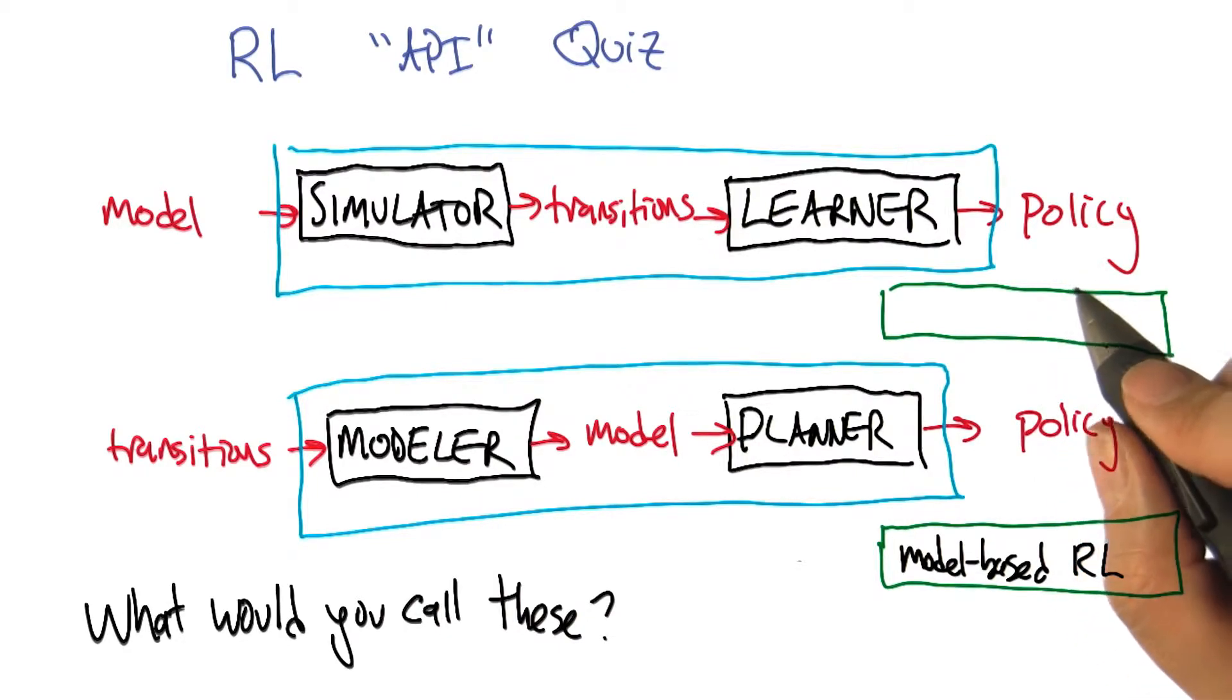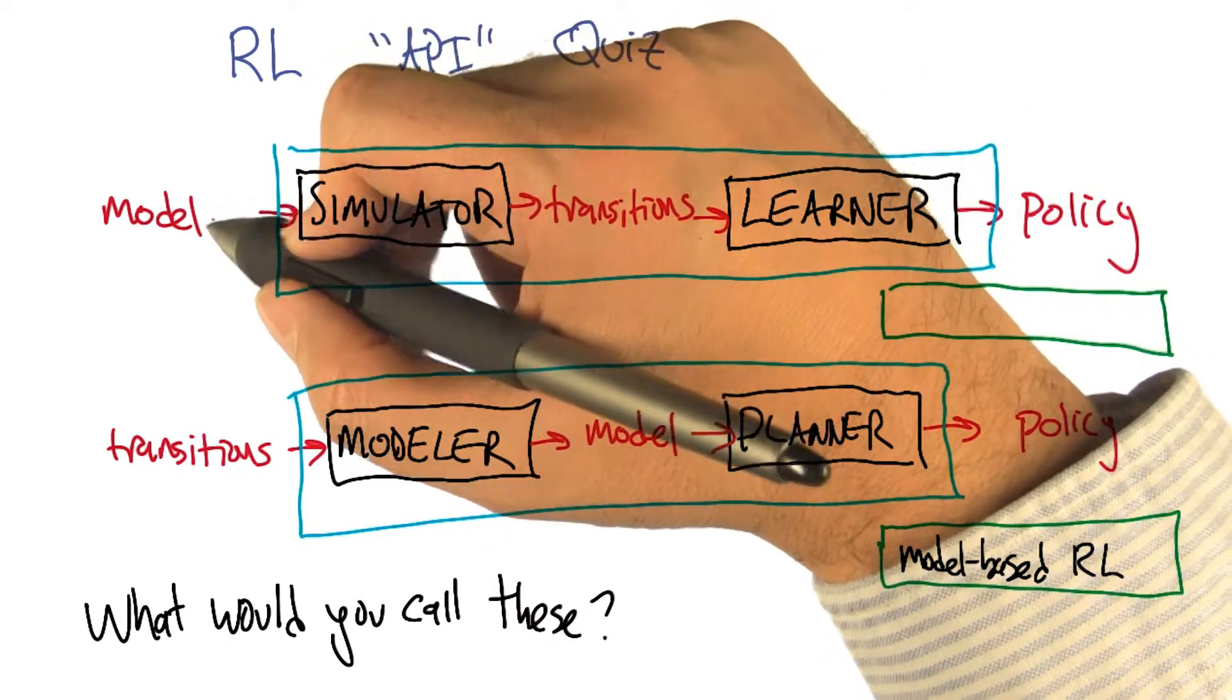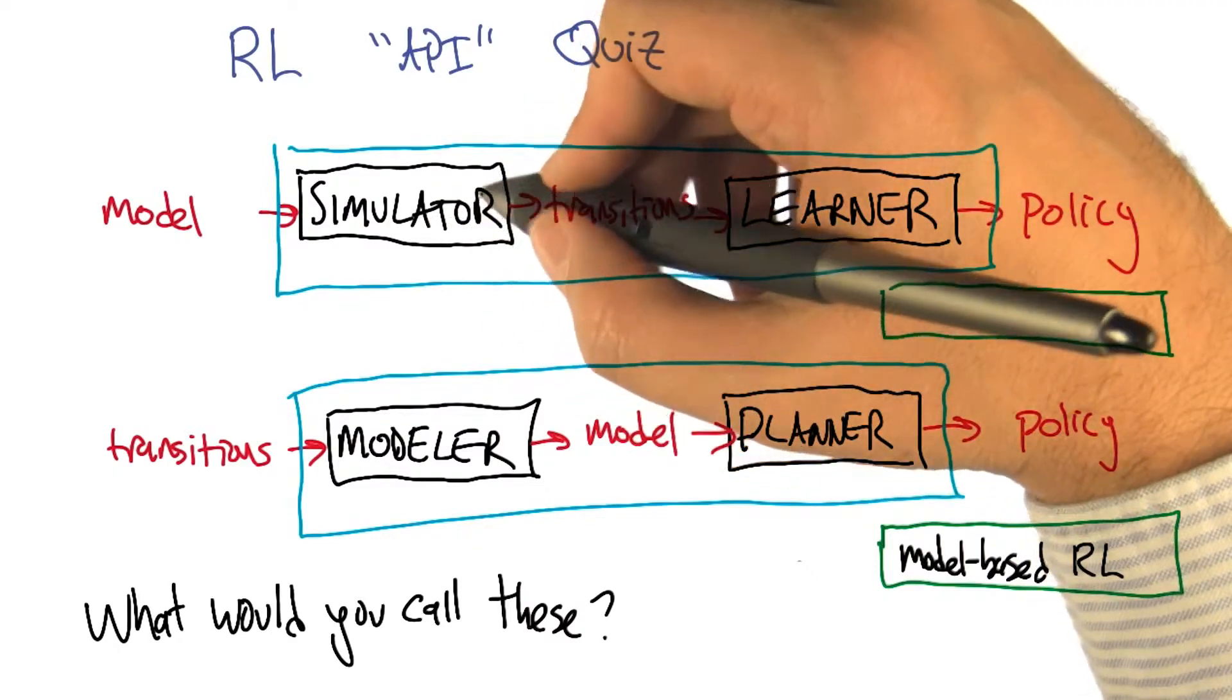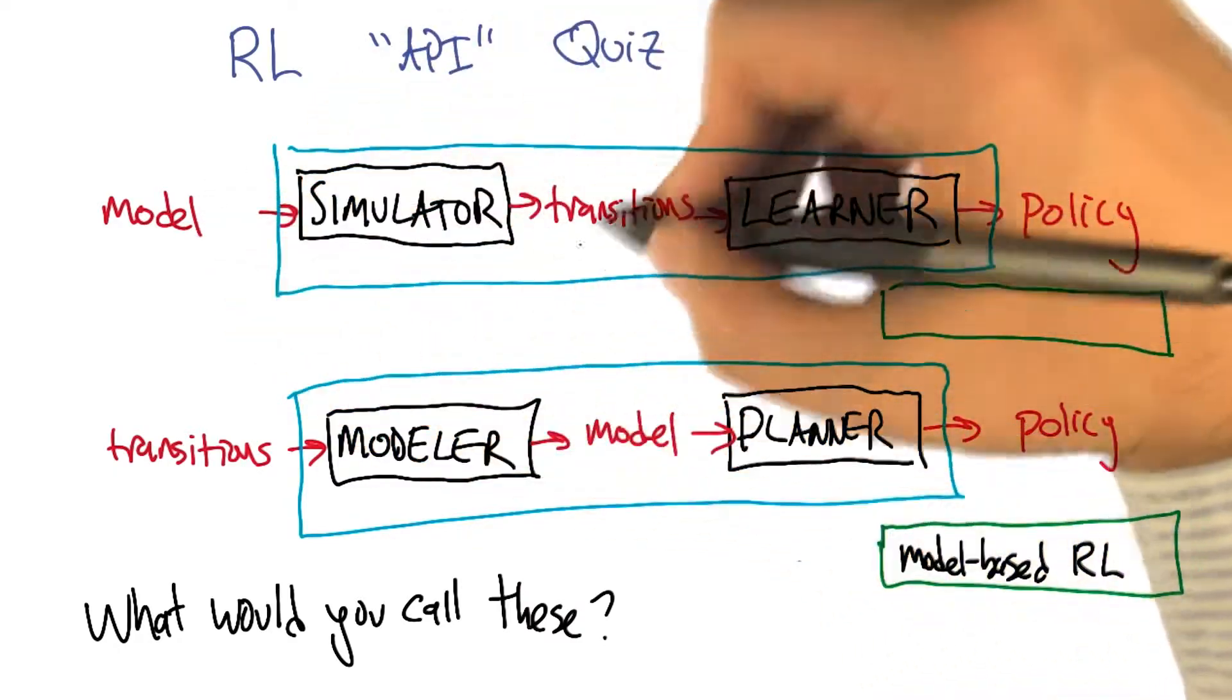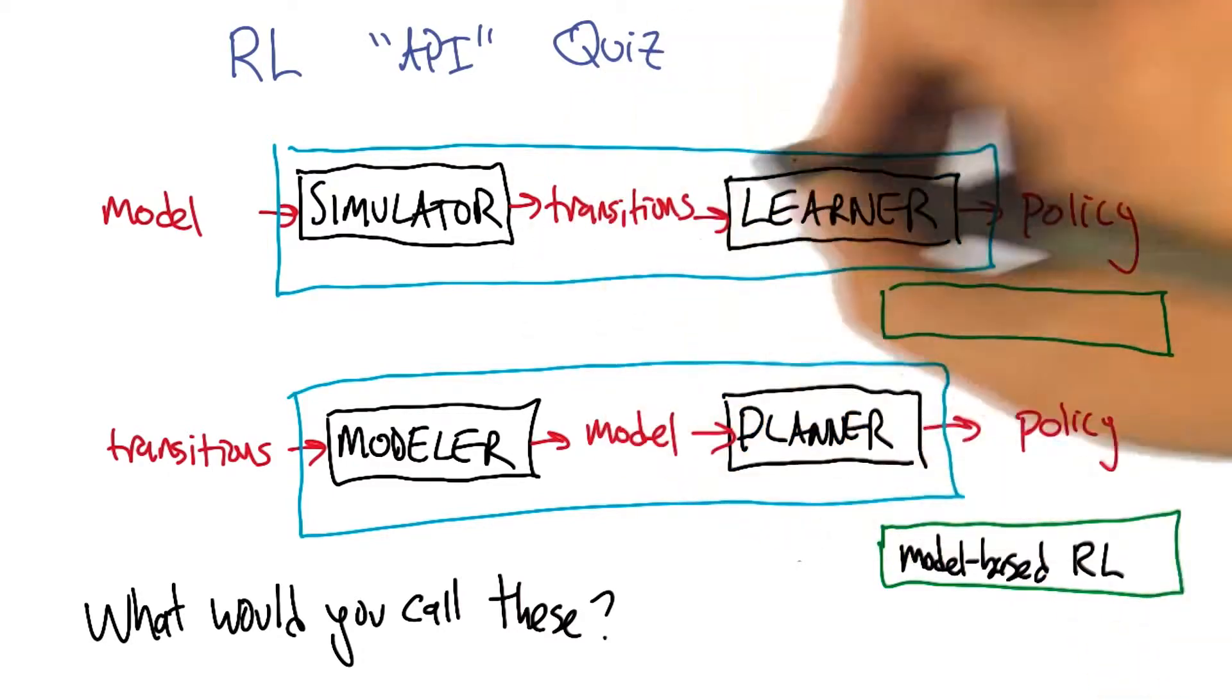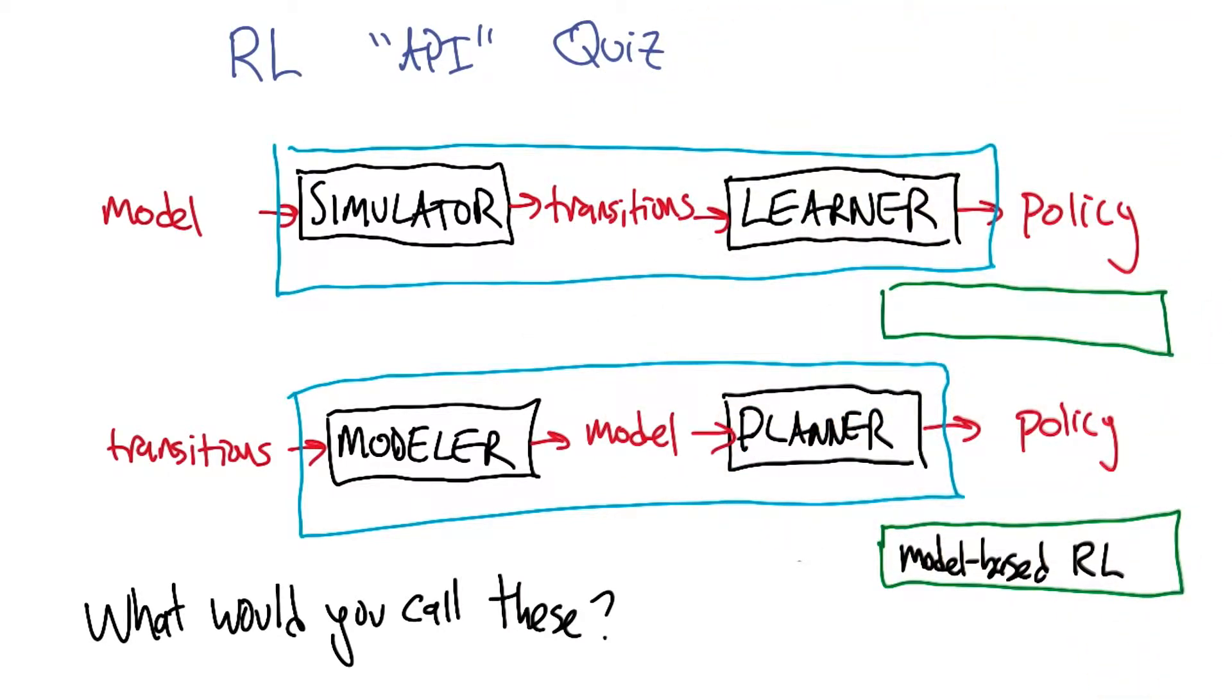All right, how about this other idea where you start off with a model and then you pretend you don't have a model. You pretend you're just in a learning situation by turning that model into transitions just by simulating them. Then the learner interacts with the simulator and spits out a policy. Well, I could come up with one of two answers. So I could try to do pattern matching on the answer to the second one. And so if that one's model based, then this one's transition based, which is kind of cute.